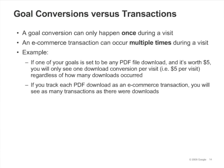There's an important difference between goal conversions and ecommerce transactions. A goal conversion can happen only once during a visit, but an ecommerce transaction can occur multiple times during a visit. For example, if you set a goal for a PDF download worth $5 and a visitor downloads five PDF files during a single session, you'll only get one conversion worth $5. However, if you tracked each download as a $5 ecommerce transaction, you would see five transactions and $25 in ecommerce revenue. You'll learn how to set up ecommerce tracking and how to track PDF downloads in later modules.